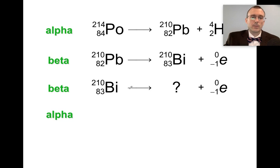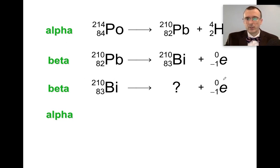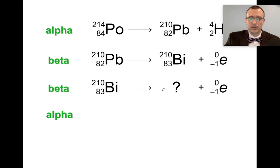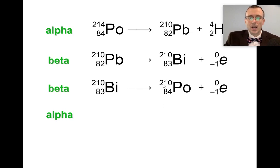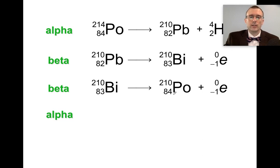Bismuth-210 is also not stable and undergoes another beta decay. We ask: what minus 1 is 83? That's 84. And 210 plus zero is 210. So it's going to be element 84 with mass number 210. Element 84 is polonium, so we reform polonium — but this time it's polonium-210, not polonium-214. And polonium-210 itself is also not stable.